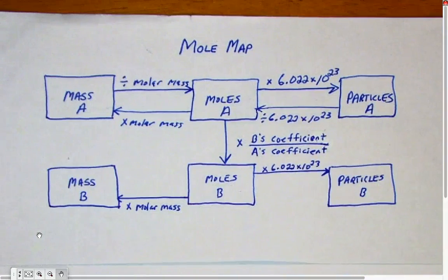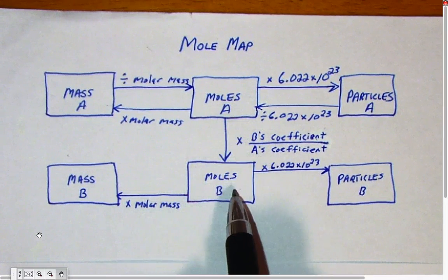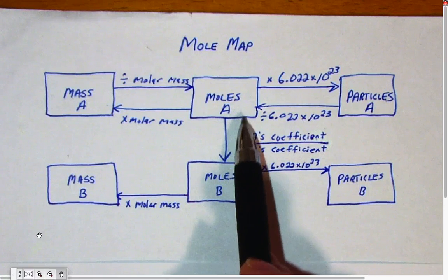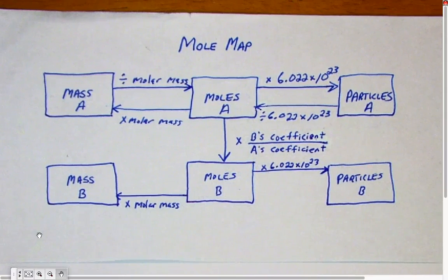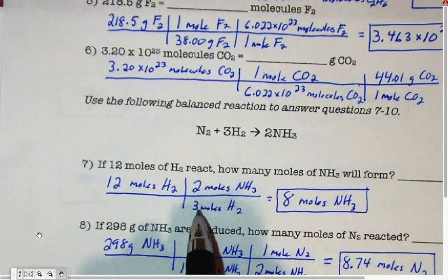Take a look at how I wrote this mole map here. I show that if you're going from knowing moles of one chemical to moles of another, and you have the reaction equation, you multiply the moles of that first chemical by the ratio B's coefficient divided by A's coefficient. And that's what's happening, two-thirds here.